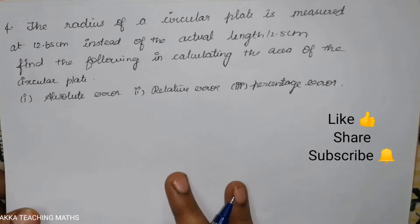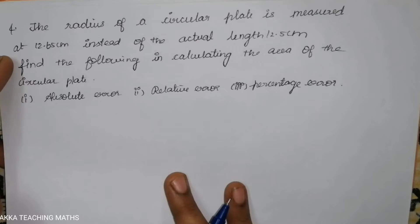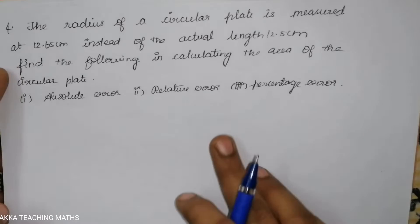Hi friends, welcome to Aka Teaching Max. Fourth question: the radius of a circular plate is measured at 12.65 cm instead of the actual length 12.5 cm.